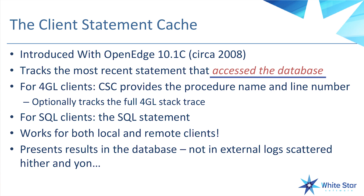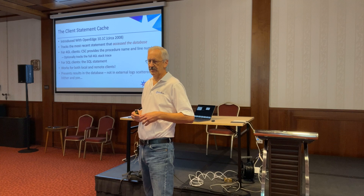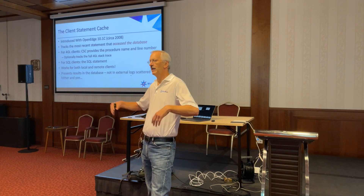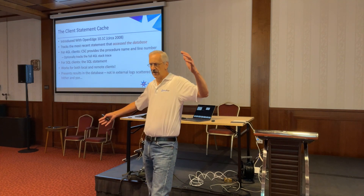For 4GL clients, you get the procedure name and the line number. It's the debug listing line number, so you have to have debug listings to get to the right line — it's not the source line number, but it's with all the preprocessor stuff expanded. For SQL clients, you get the SQL statement. If somebody's got a SELECT blah blah blah — usually goes on about this long — you get that whole thing.